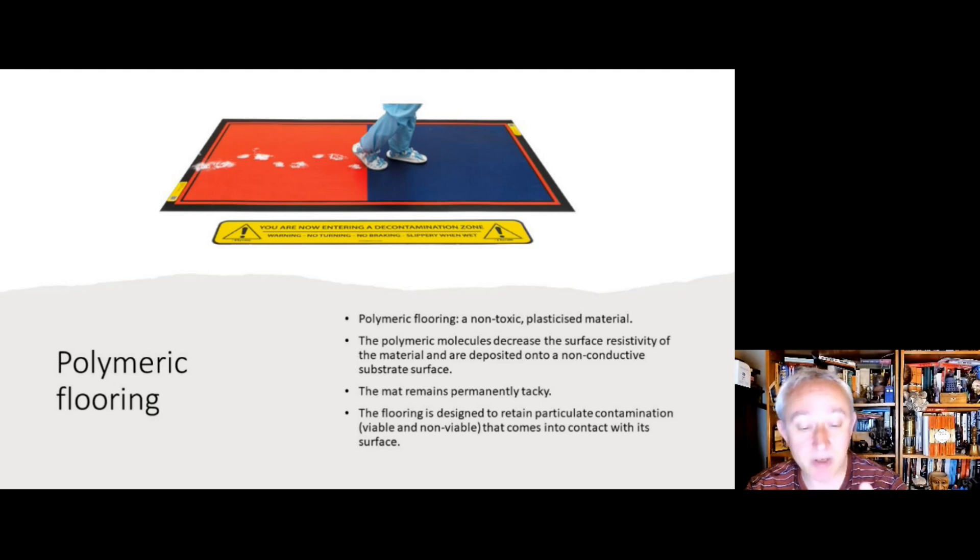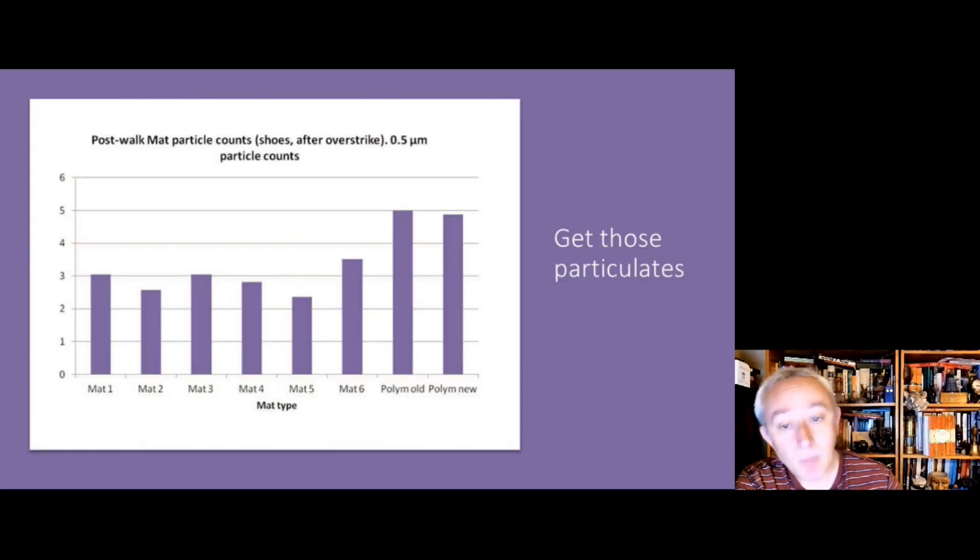The flooring is designed to retain particulate contamination that could be viable microorganisms or other forms of particles that come into the surface. This is because there's electrostatic forces binding particles to the surface. The function of Dyson flooring or polymeric flooring is to attract particles to the surface and then retain those for long periods of time until they can be removed by cleaning. It's very good practice to apply a detergent regularly to remove the captured particles.